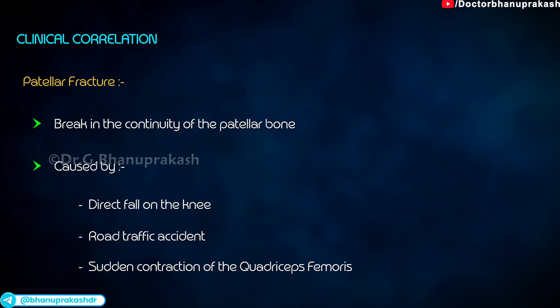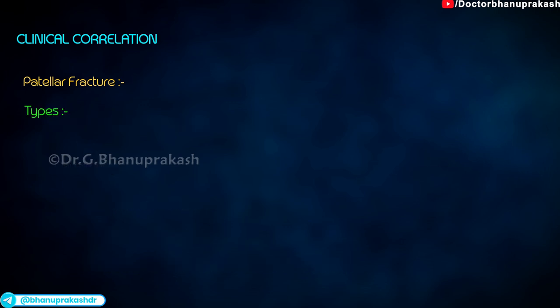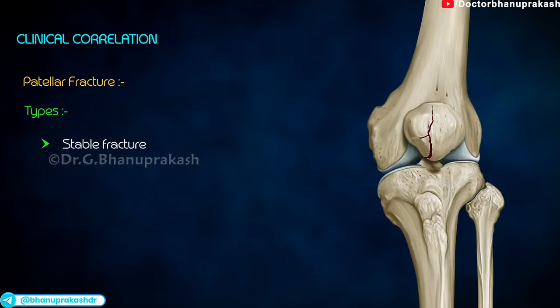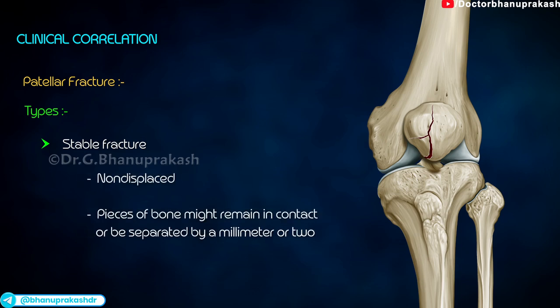The bone can break in many ways and in many different places. Types. Stable fracture: this type of fracture is non-displaced. The pieces of bone might remain in contact or may be separated by a millimeter or two. The bones usually stay in place during healing.